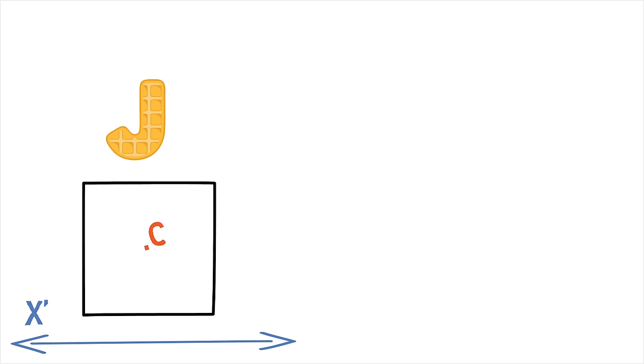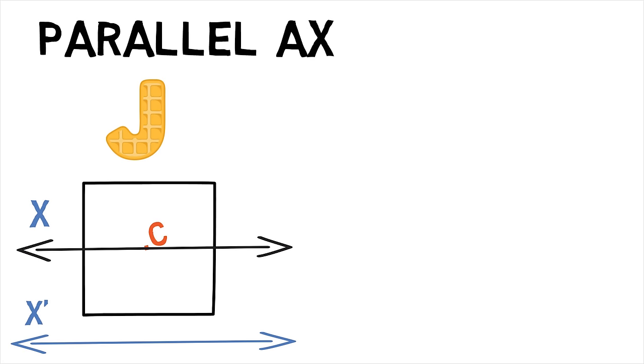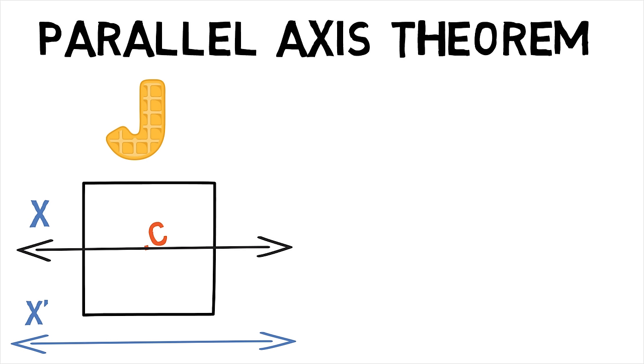It is sometimes necessary to calculate the area moment of inertia for a shape with respect to an axis X' different to the centroidal axis of the shape. However, it is often easier to derive the area moment of inertia with respect to its centroidal axis X and use the parallel axis theorem to derive the area moment of inertia with respect to X' axis.